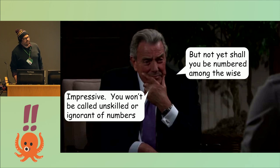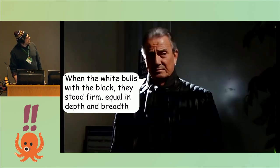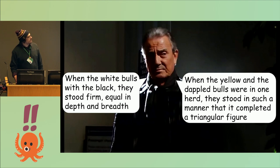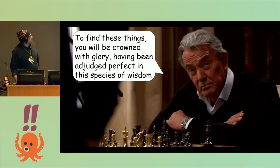Archimedes is impressed, but not that impressed. He ups the ante and tells her that with the white and black bulls together, they form a square, and when the yellow and dappled bulls are together, they form a triangle. Catherine's like, yeah, no big deal. How hard can it be? He's like, if you can do this, then I'll really be impressed.